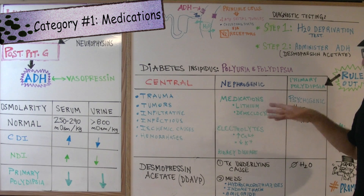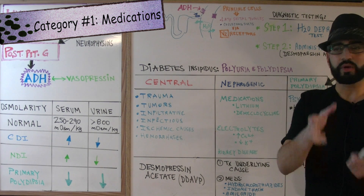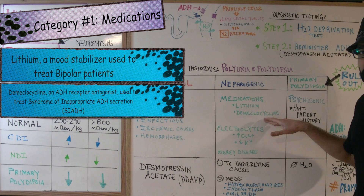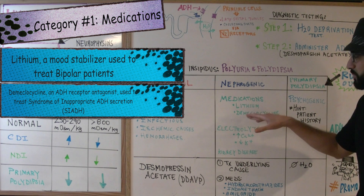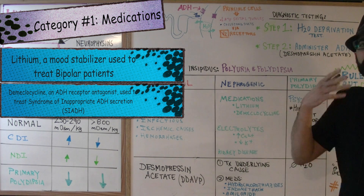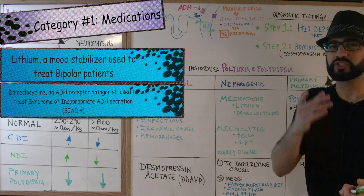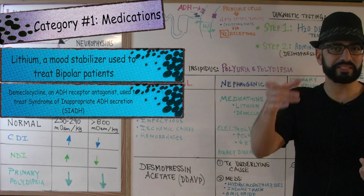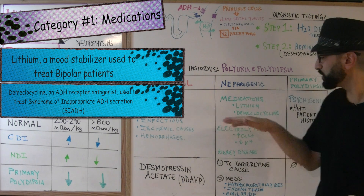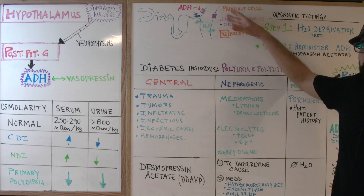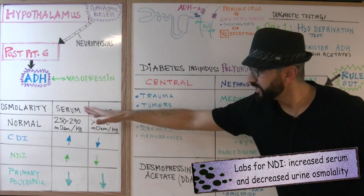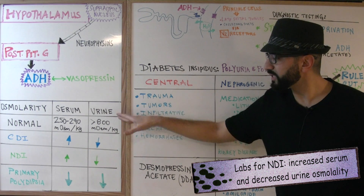For nephrogenic DI, we mention a couple of medications: lithium and demeclocycline. Lithium is a medication used for bipolar patients. Demeclocycline is an antagonist of antidiuretic hormone. Why would someone need an ADH receptor antagonist? Think about syndrome of inappropriate ADH secretion — SIADH — where there's too much ADH being secreted. We use demeclocycline for that. But as a side effect, demeclocycline can over-block those receptors, so ADH can't work, presenting with high serum osmolality and very low urine osmolality.